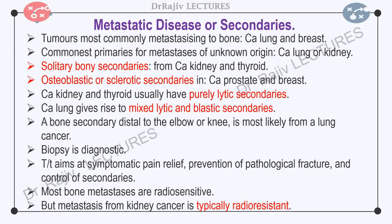The metastatic lesions may be lytic, blastic, or mixed. The majority of bone secondaries are osteolytic. But carcinoma of the prostate and breast are the commonest tumors to give rise to blastic or sclerotic bone secondaries. Kidney and thyroid cancer usually give rise to purely lytic secondaries. Sclerotic metastasis results from tumor cells secreting proteins that stimulate osteoblastic bone formation. Metastatic lung cancer may give rise to mixed lesions, both lytic as well as blastic, and may have a cortex-eaten appearance. A bone secondary distal to the elbow or knee is most likely from lung cancer. Investigation and workup consists of history and physical examination focusing on breast, prostate, lung, and kidneys, as well as basic laboratory tests including serum protein electrophoresis and prostate-specific antigen.